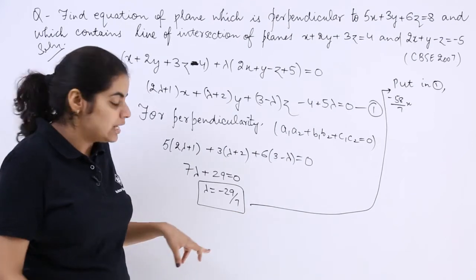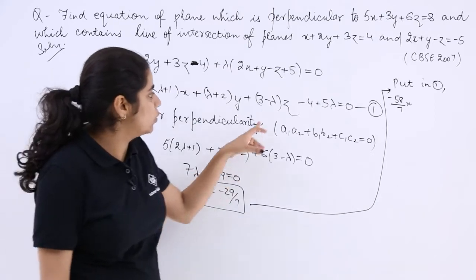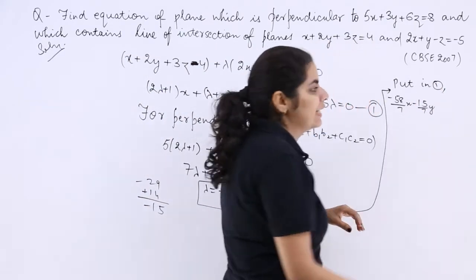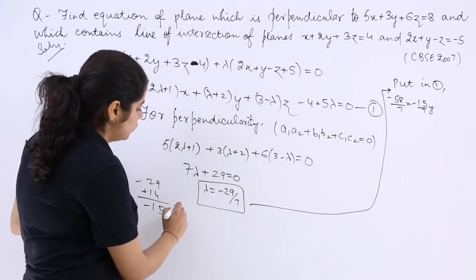Then minus 29 plus 14 is minus 15 over 7 y. Then come here, 3 minus lambda, so 3 plus...